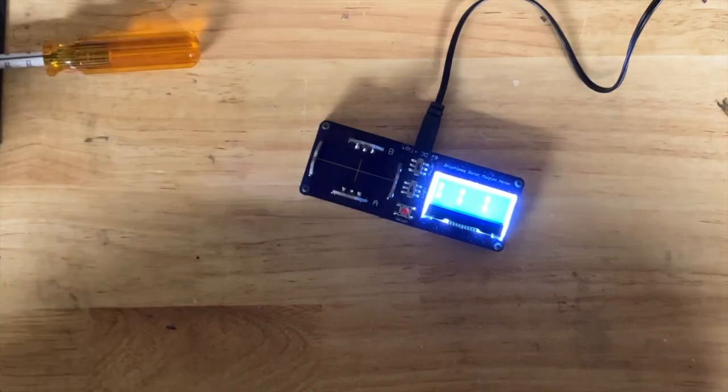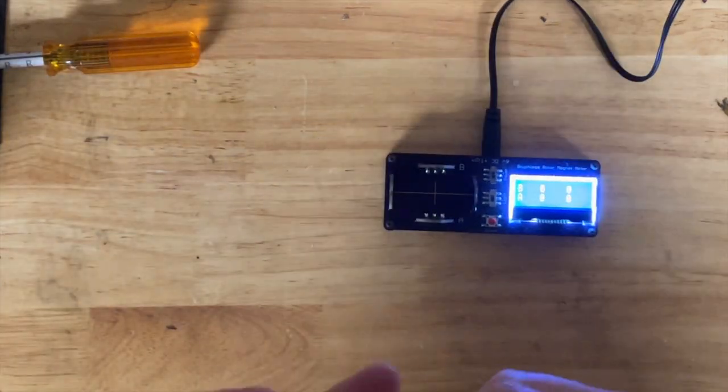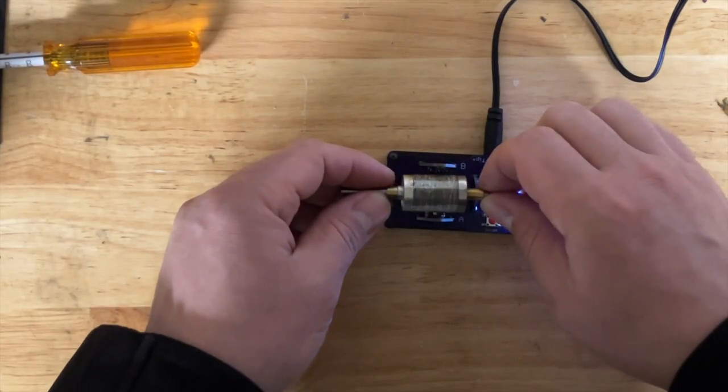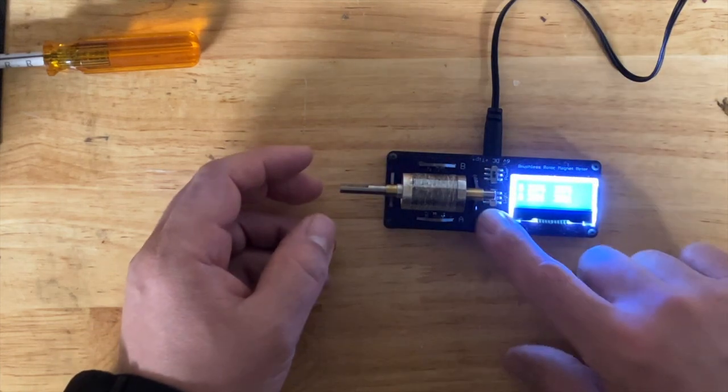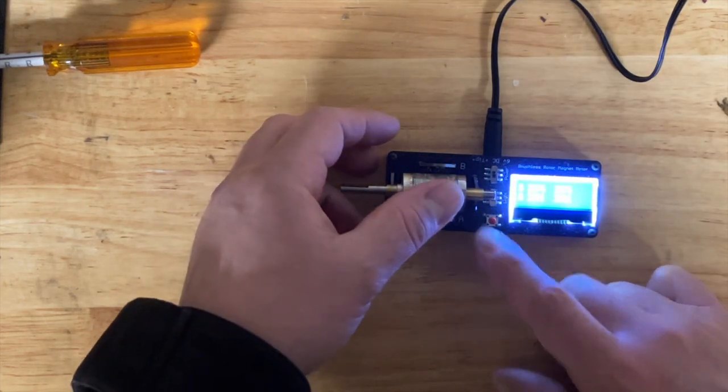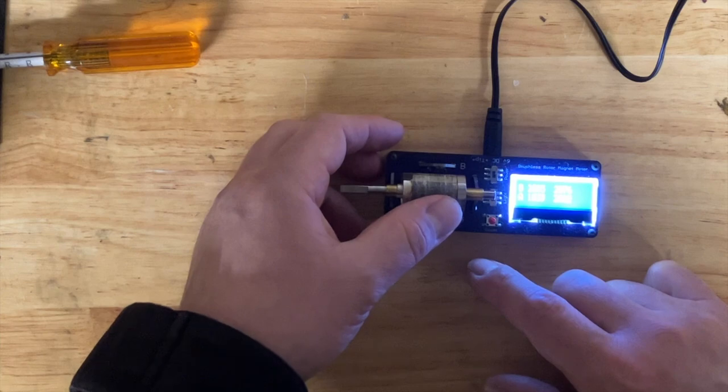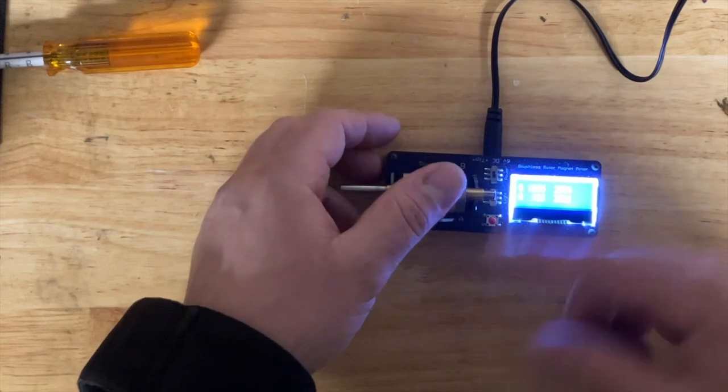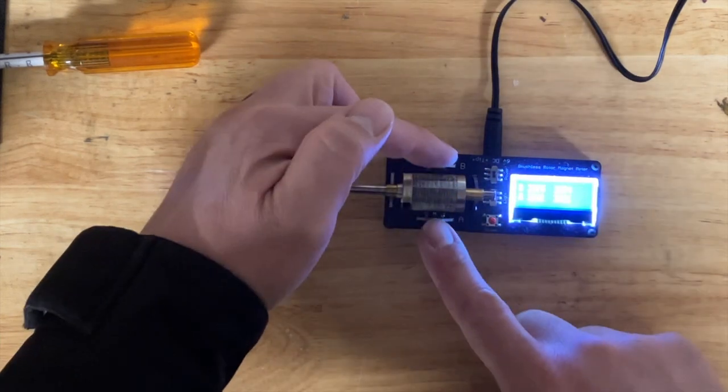But let's see the gauss. That's really what I was interested in. I know I'm switching between the poles. The sensors are here on the side.